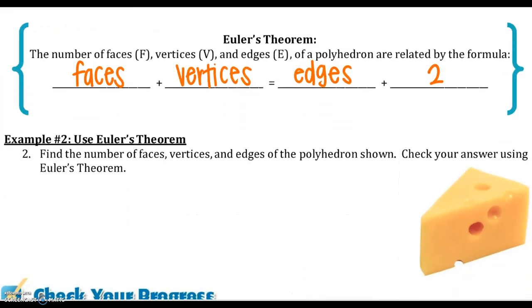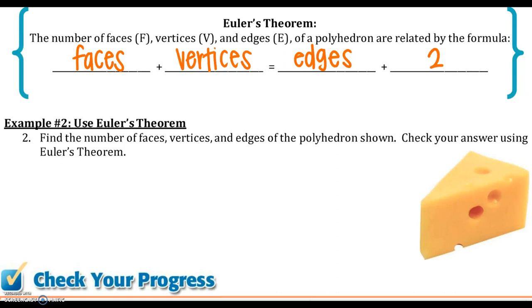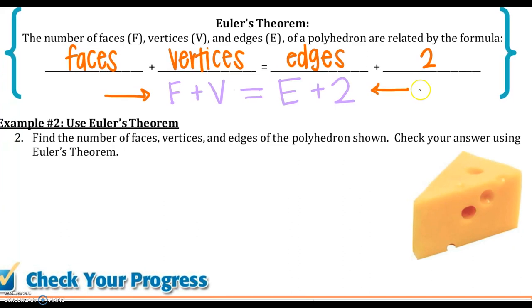And moving on, here is a theorem called Euler's theorem. This is where, what you can use to just verify you are counting correctly. So your faces plus your vertices must equal your edges plus two. So make sure that that formula checks out every time you count. And if it does, then you have counted correctly. That formula makes a polygon or a polyhedron. Makes a polyhedron.